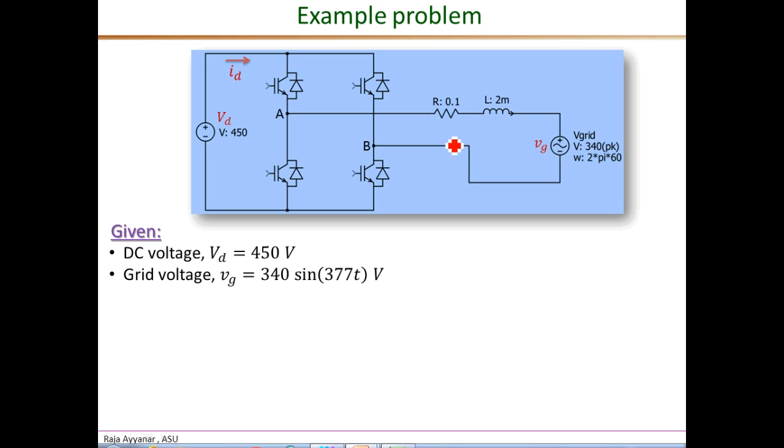The converter interfaces to the grid through a single L filter as shown here. The sum of the inductance of this filter and any series inductance of the grid is given as 2 mH. Similarly, the resistance of the filter inductor plus the resistance of any wiring is given as 0.1 ohms. This two-pole converter employs unipolar PWM.